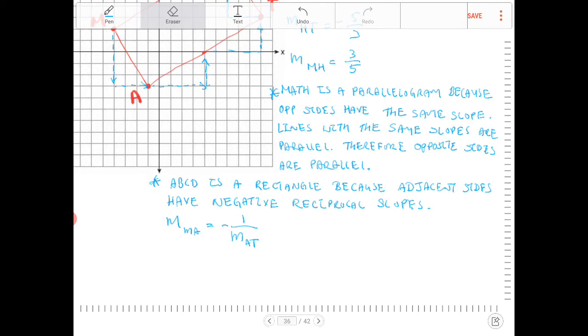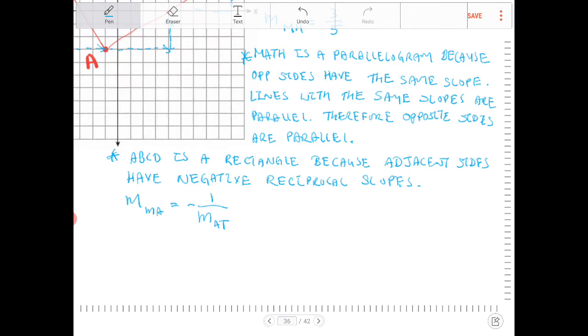And a parallelogram with one right angle is a rectangle. So here, let me see here. Have negative reciprocal slopes. Therefore, MA and AT are perpendicular.